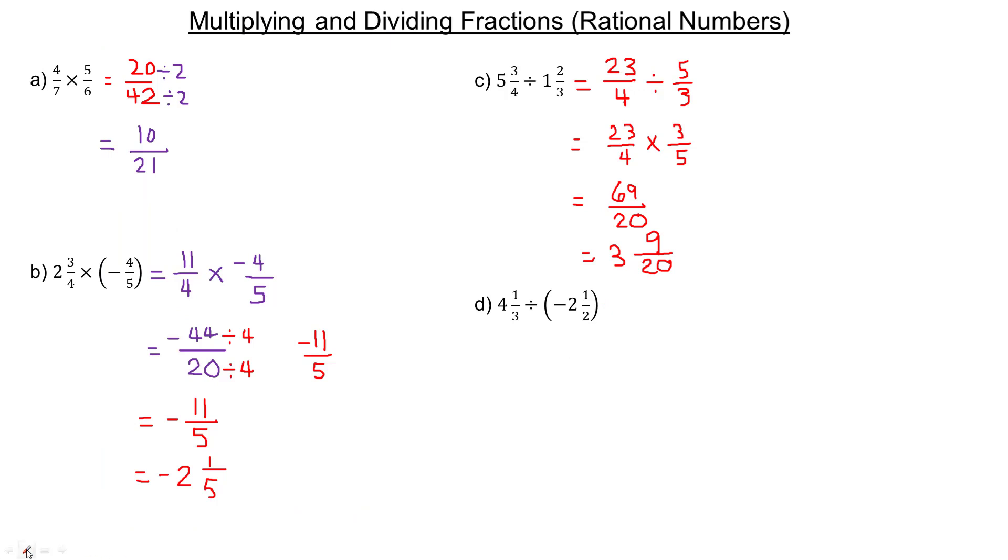For the last example, we change them to improper form. 4 times 3 is 12, plus 1 is 13, so that's 13/3. Be careful with the sign here—it's not negative 2 times 2 plus 1. You're changing 2 and 1/2 to improper form, then making it negative. So 2 times 2 is 4, plus 1 is 5, giving us -5/2.